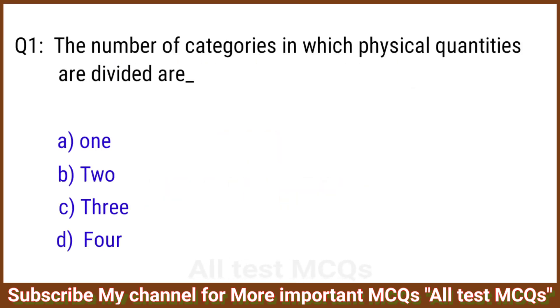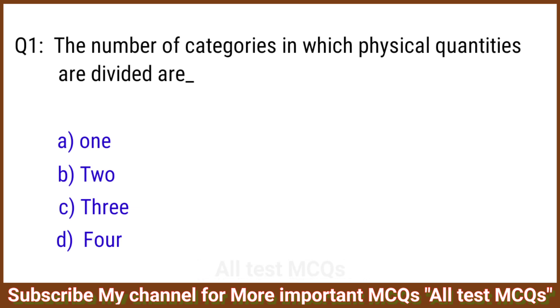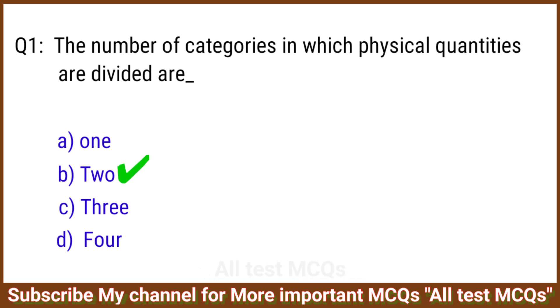Q1. The number of categories in which physical quantities are divided are? The right answer is option B: 2.